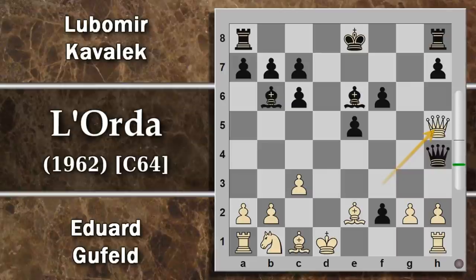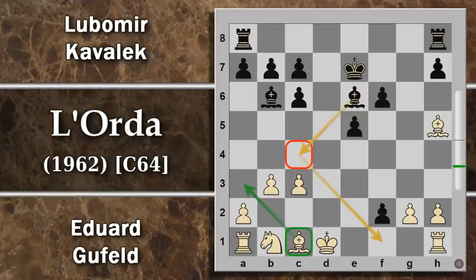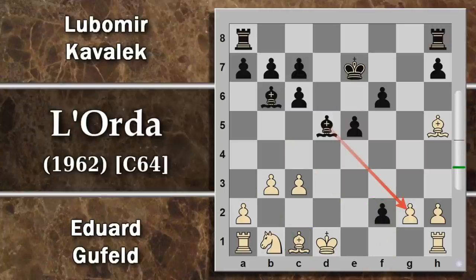Gufeld decide di giocare donna h5, forzando il cambio delle donne per alleggerire la posizione d'attacco del nero. Si cambiano le donne con scacco, e il bianco sembra guadagnare una mossa facendo spostare il re. In realtà con questa semplice mossa il nero ha a disposizione anche le torri, su colonne aperte e semi-aperte, quindi il bianco non ha guadagnato niente. Si prosegue con b3 per sviluppare l'alfiere a campo scuro e impedire alfiere c4. Si gioca alfiere d5: un'altra debolezza sfruttata dal nero.